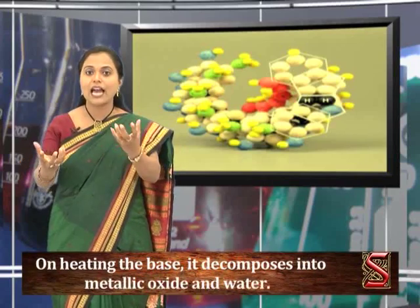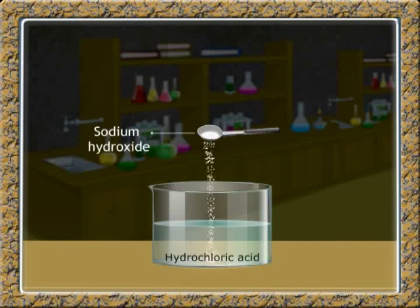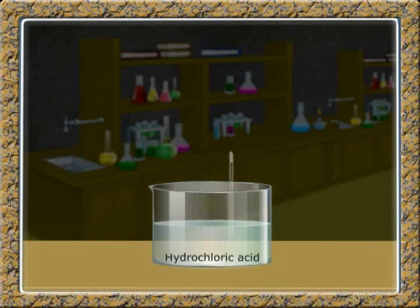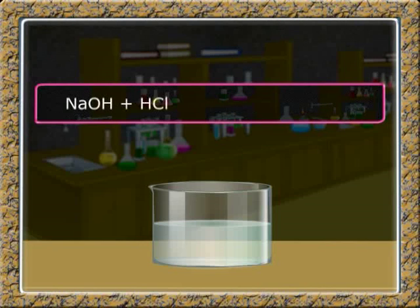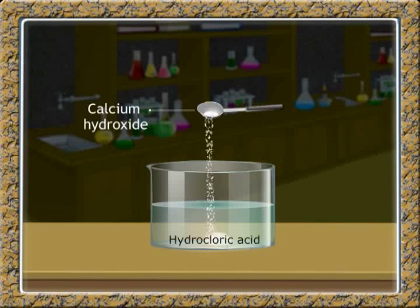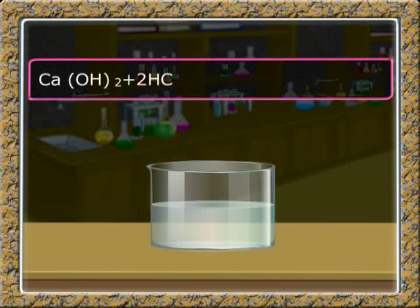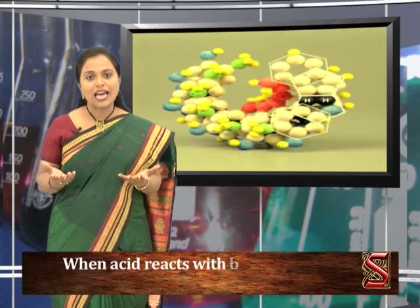Thus, we can say that on heating a base, it decomposes into a metallic oxide and water. When sodium hydroxide, a base, reacts with dilute hydrochloric acid, it forms sodium chloride and water: NaOH + HCl → NaCl + H₂O. When calcium hydroxide reacts with dilute hydrochloric acid, it forms calcium chloride and water: Ca(OH)₂ + 2HCl → CaCl₂ + 2H₂O. When an acid reacts with a base, it forms salt and water.